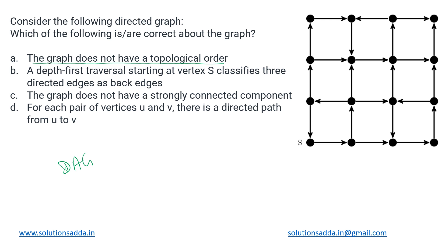It is not acyclic. We can see two cycles in this graph — here is one cycle, and in the same way we can see another cycle between these four nodes. So this graph is definitely not acyclic, meaning the topological order will not exist for this graph.